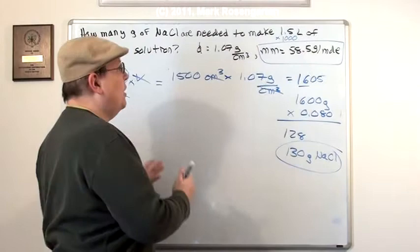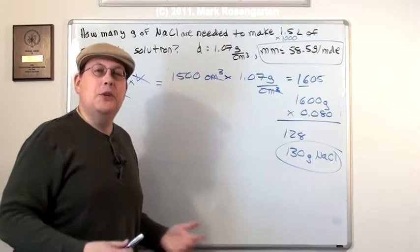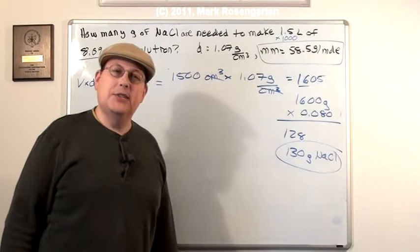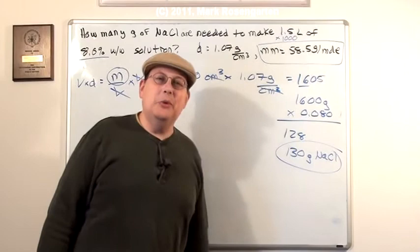So for a 1.5 liter solution, it's made up of 130 grams of sodium chloride and the difference is the number of grams of water to make up your solution. This can allow you to calculate the molality of the solution, which is also handy when you do colligative properties, you know, boiling point elevation, freezing point depression.